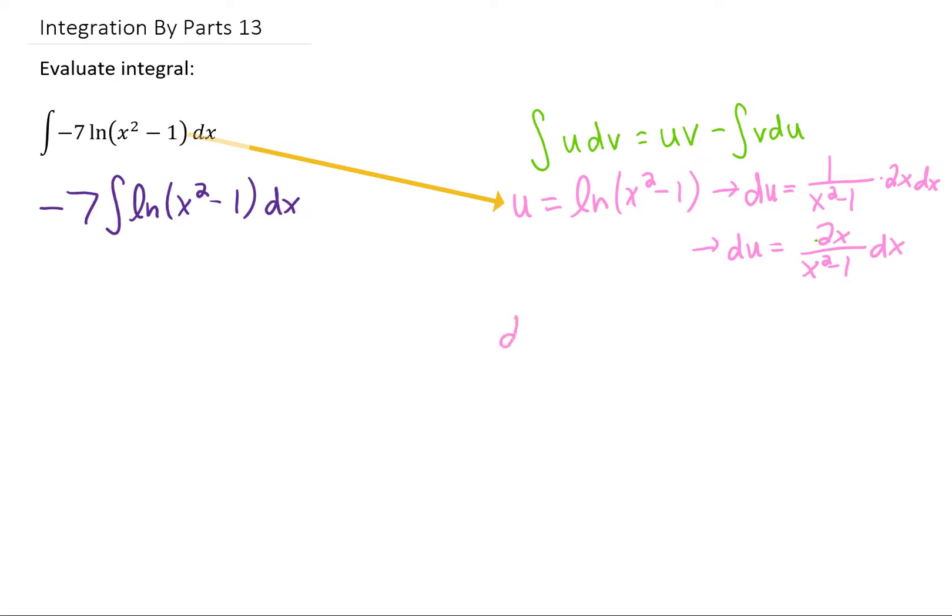All right, this thing's looking pretty bad already. But looking back at our original integral, you'll notice that the only thing we have left for dv is dx. At least that's simple, we get v equals x.